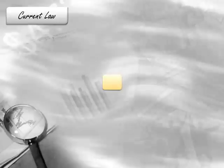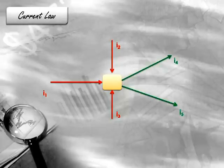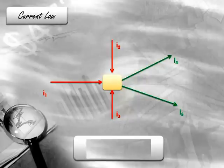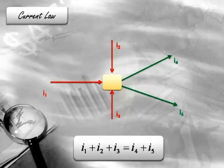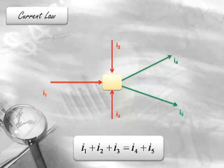So for example, let's take any junction in a circuit that has three currents flowing in — we'll call them I1, I2, and I3 — and two current streams flowing out, I4 and I5. Then I1 plus I2 plus I3 is equal to I4 plus I5, as whatever current enters a junction must leave it.